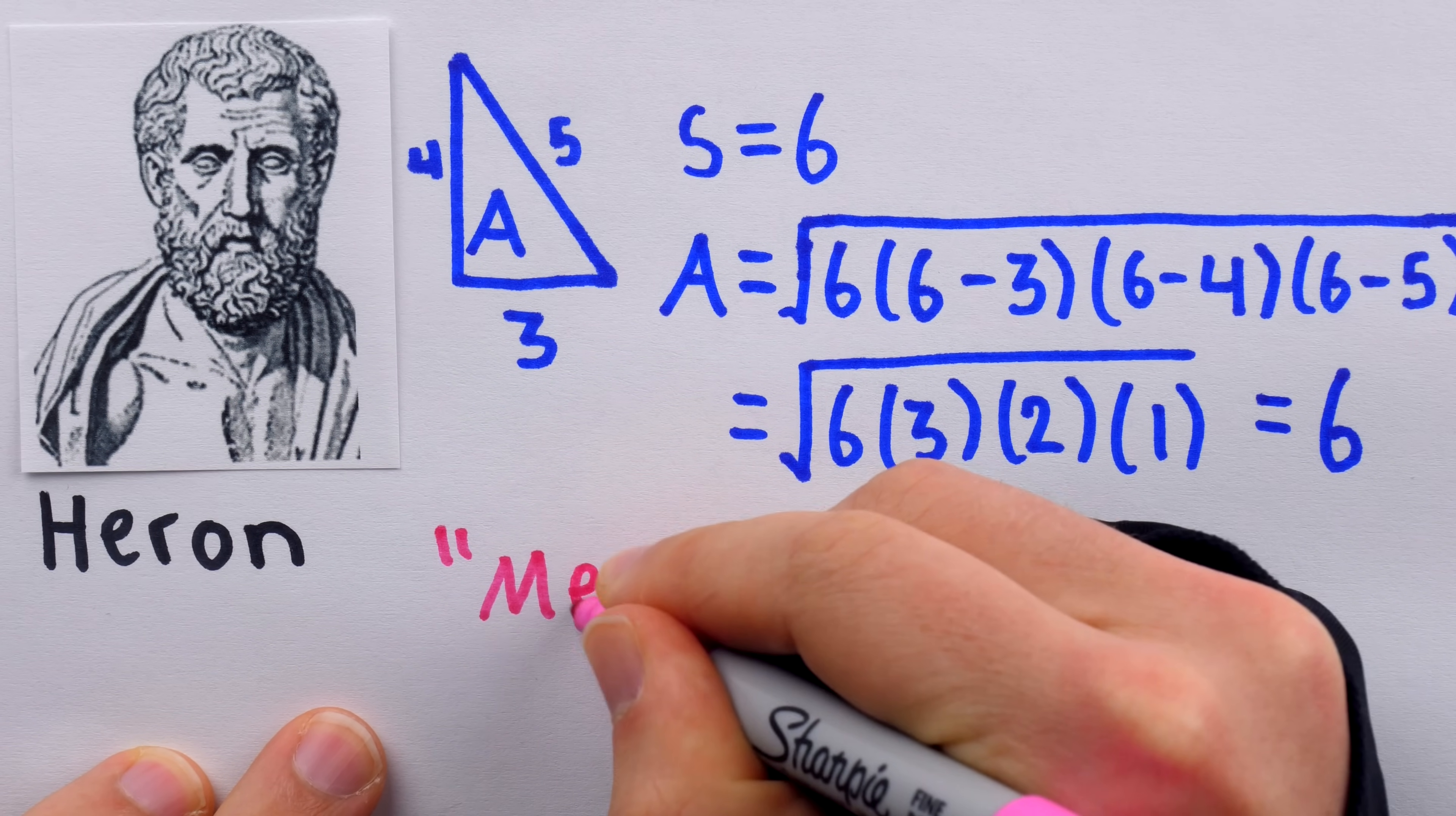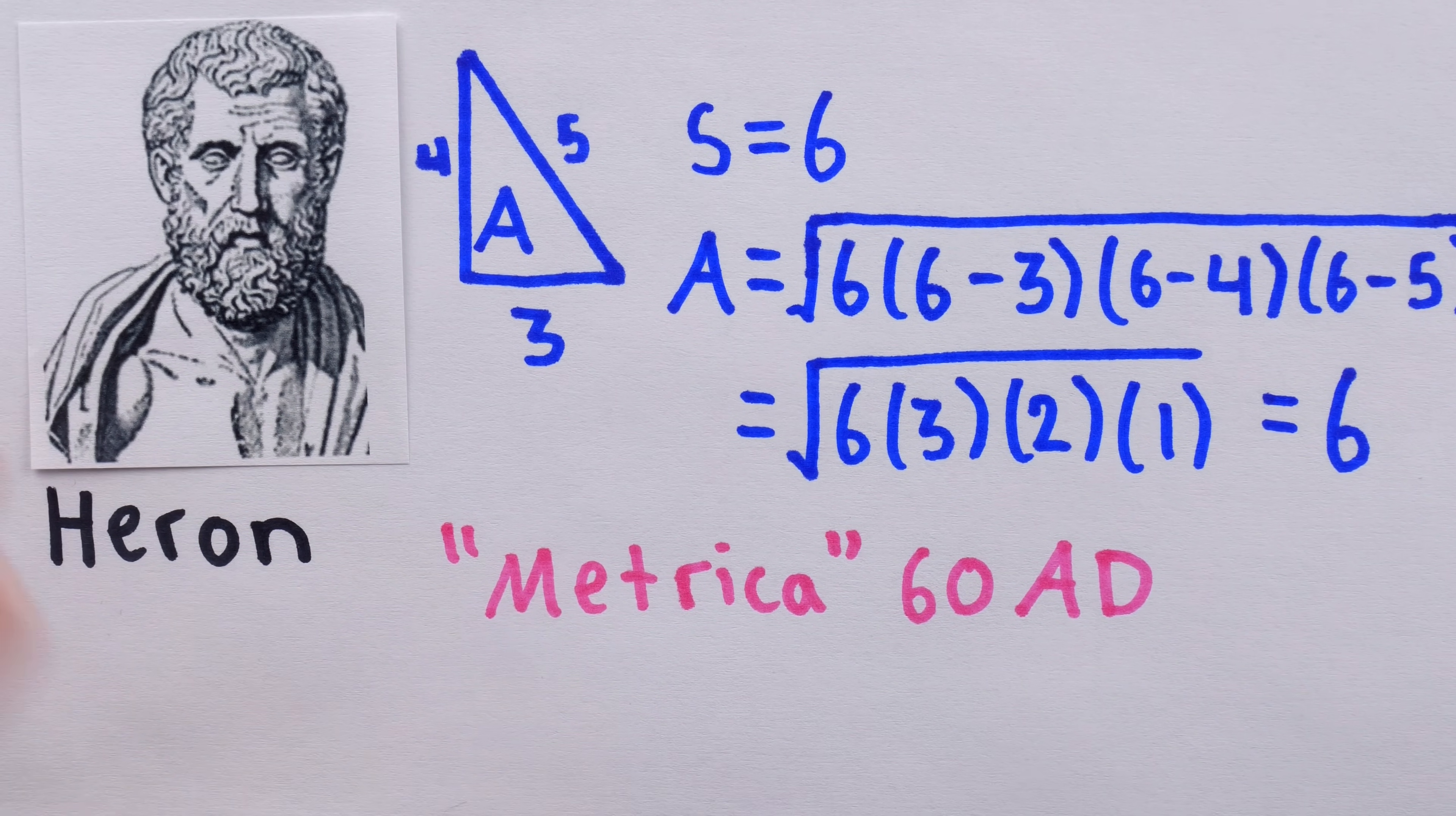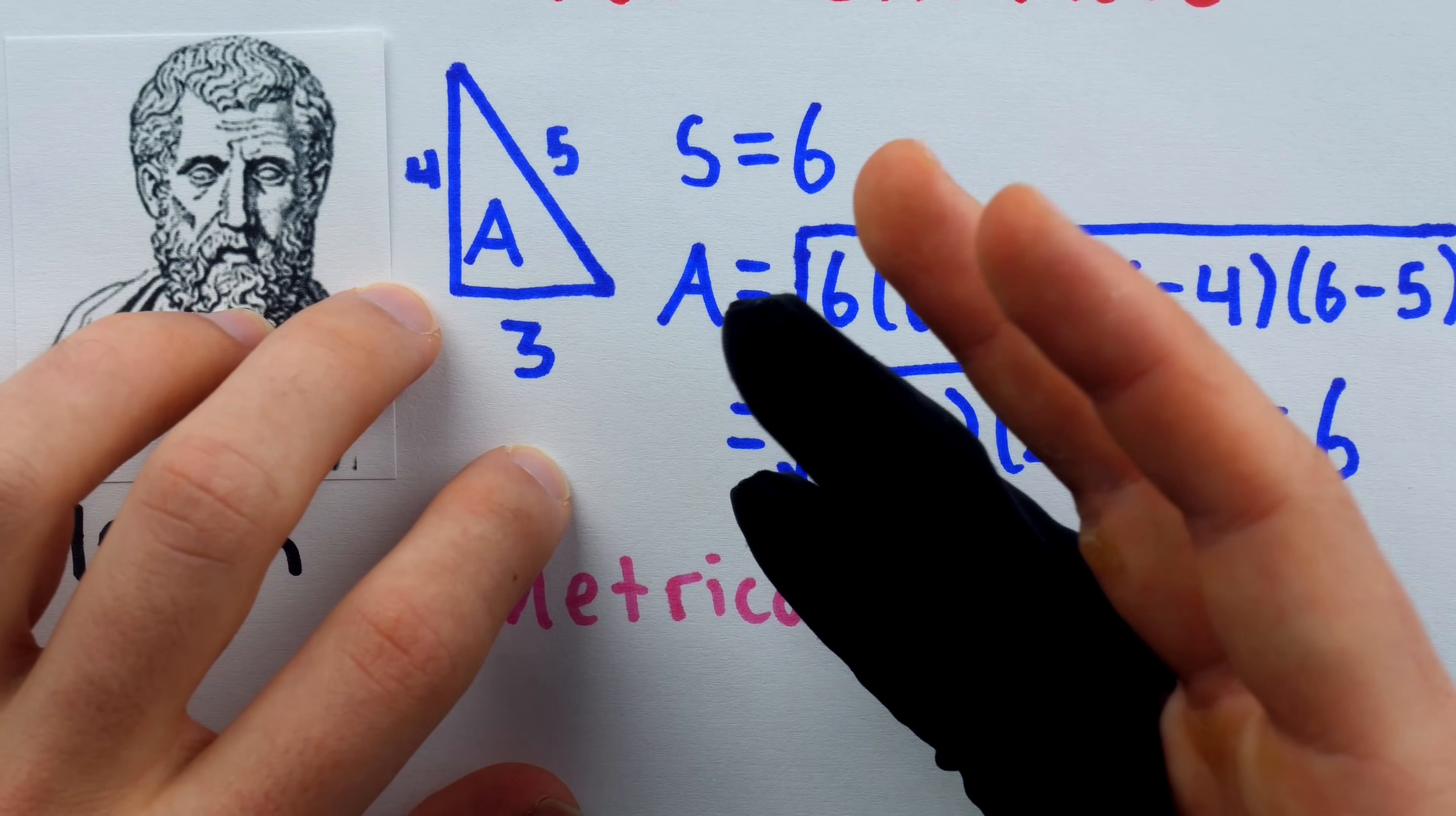This formula was known before Heron's time, but he proved it in his work called Metrica, which is dated to around 60 AD. Although this is the greatest hit that everybody knows, in Metrica, Heron also introduced something else that I think is way more interesting and computers still use today. It's something called Heron's method, a shockingly good way to compute square roots.